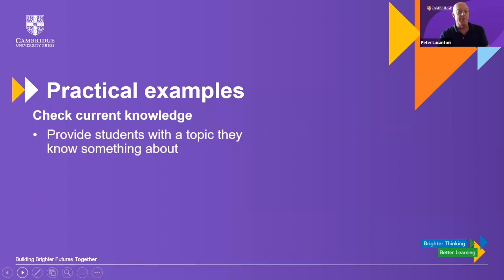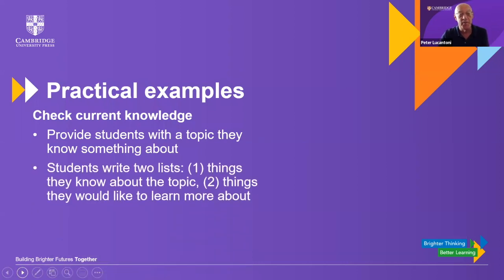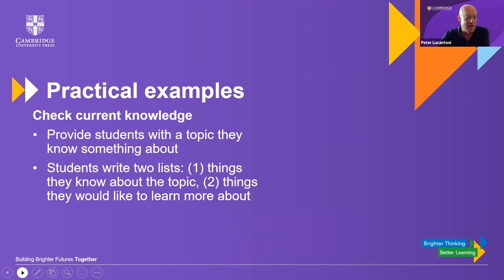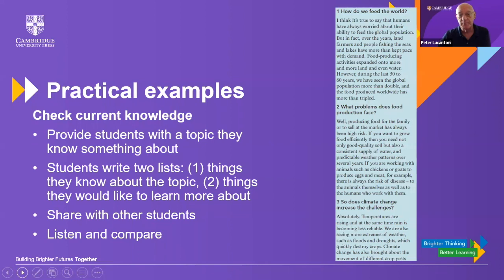'Checking current knowledge' is another nice idea for activating active listening. Give students a topic they know something about — not something obscure, but something they will have some knowledge about. Students write two lists: things they know about the topic and things they would like to learn. They share with other students, then listen and compare their lists with what they actually hear. Again, just use what's in the course book — no need to go beyond it, everything is there for you.